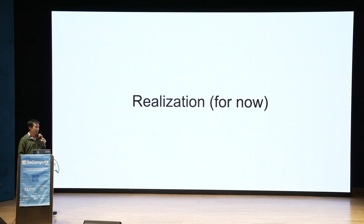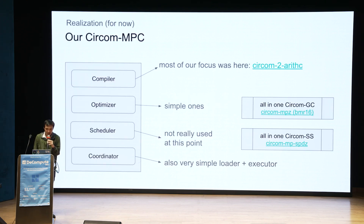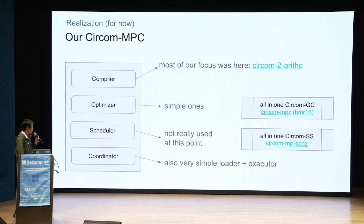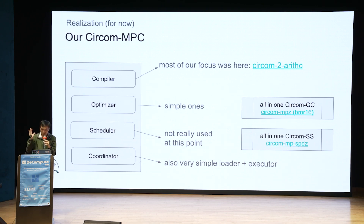We started this project not so long ago. Right now most of our focus has been on the CIRCOM-to-arithmetic circuit compiler. For the optimizer we have very simple ones. We don't really need the scheduler yet, because right now we have two end-to-end stacks from this framework. We have CIRCOM garbled circuit — we call it CIRCOM MPZ, which is arithmetic garbled circuit — but it is currently broken.